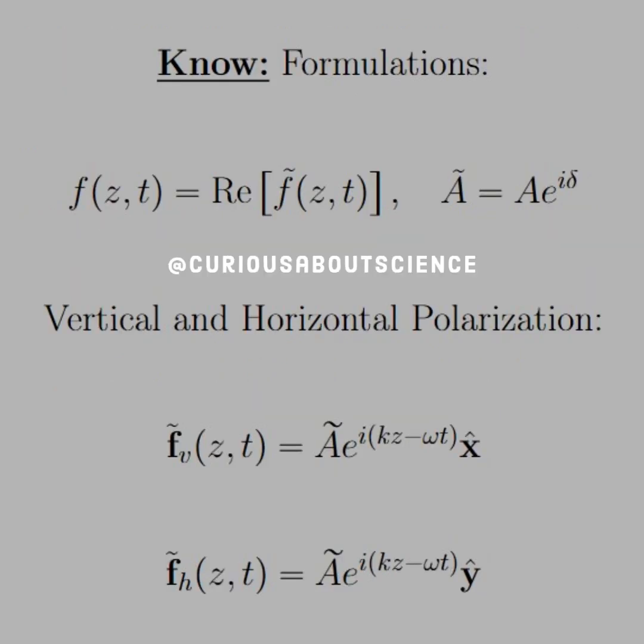For the formulations, what we have to remember is that the function F of Z of T is equal to the real part of the F tilde notation, and the A tilde is equal to A times e to the i delta. With all this complex notation, it is definitely a headache, a lot to keep track of, and by now I'm sure we're all tired of writing a tilde. Thank you, copy and paste.